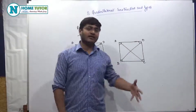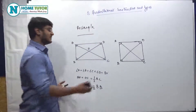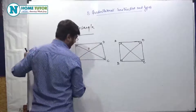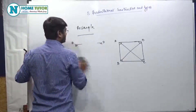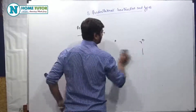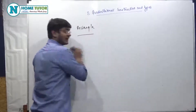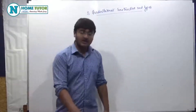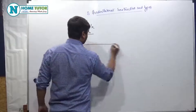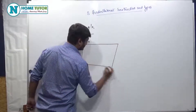Now, there is one more kind of quadrilateral — that is rhombus. A rhombus is basically a parallelogram. Parallelogram एक ऐसा figure होता है जिसकी opposite sides parallel होती हैं. It doesn't always have to be 90 degree or right angled — कोई भी angle हो सकते हैं, but वो हमेशा parallel होती हैं. Rhombus एक special type का parallelogram होता है जिसकी चारों sides equal होती हैं.